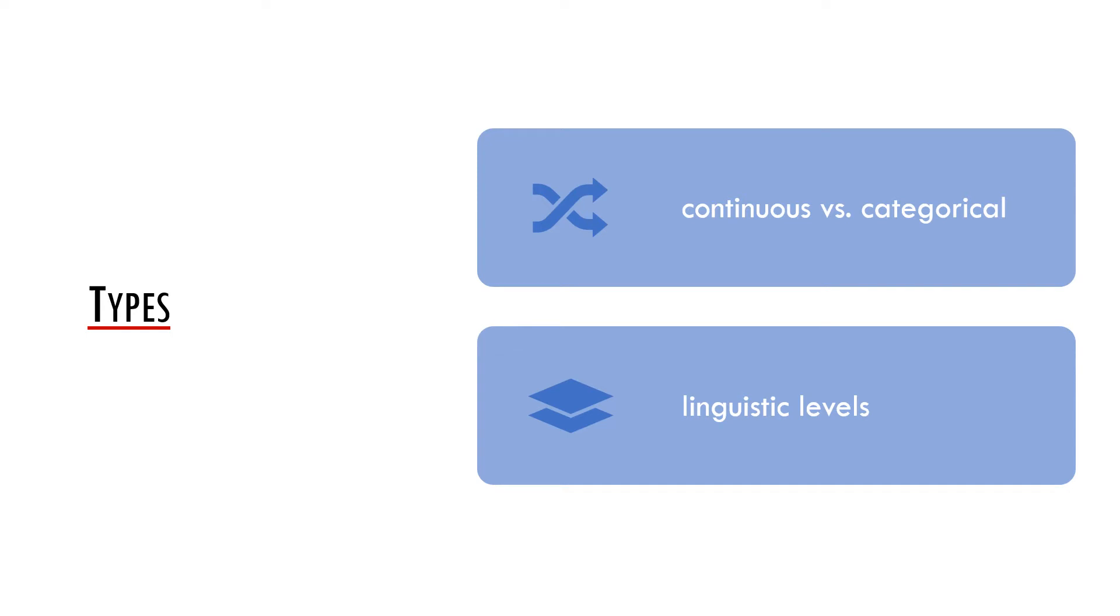For example, the vowel a in the word mam, which means I have in Czech, can be pronounced very shortly as mam, a bit longer as mam, or really very long as mam. Particular values lie on a continuum which can be easily quantified in milliseconds using certain software.